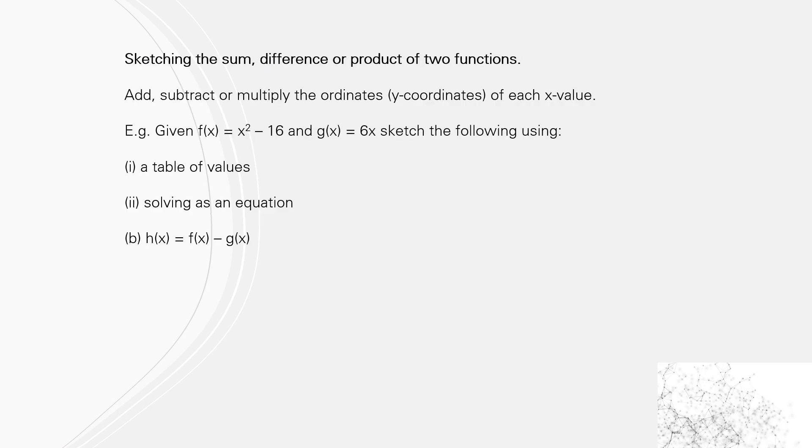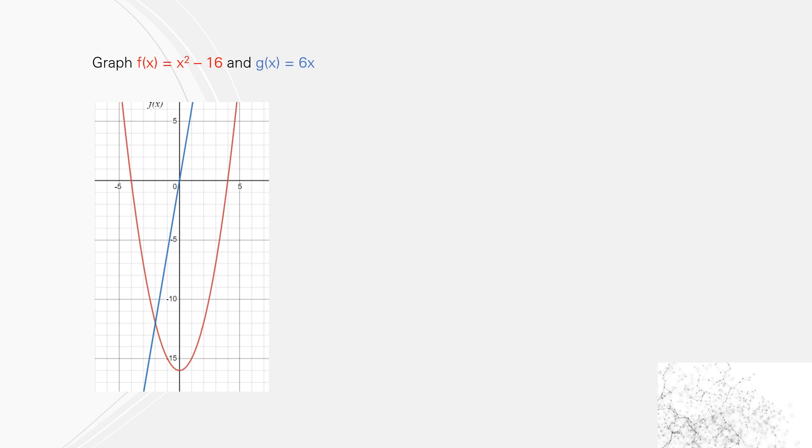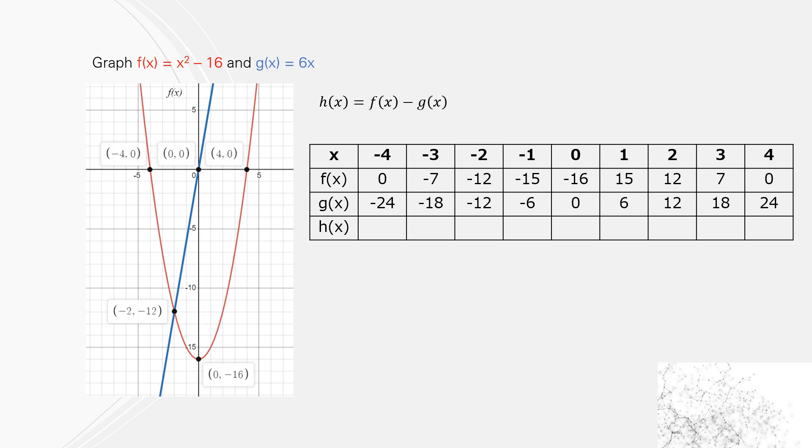Let's now have a look at when we do the difference of the two. So here's our graph again of the parabola and the straight line. So now we're going to subtract the function f(x) minus the g(x) function, and we're going to subtract the y-values. So let's make sure with the first one: 0 - (-24) gives us 24. With the second one, -7 - (-18) gives us 11, etc., as we go across.